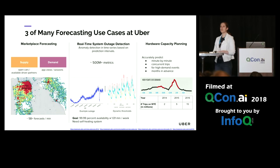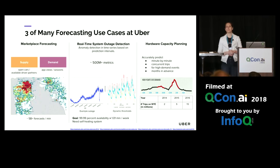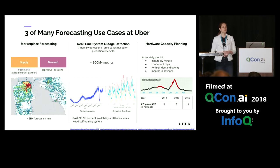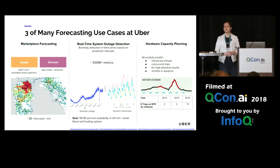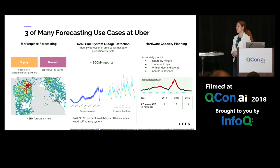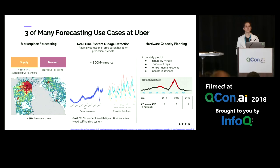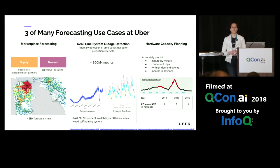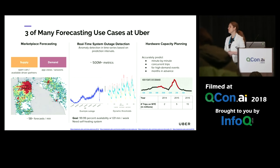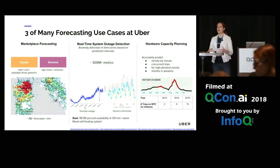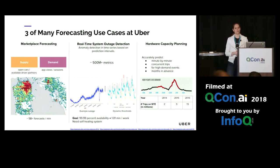Here I'm showing three of the many forecasting use cases that we have. The first one is marketplace forecasting. Here we are predicting both supply and demand, and a couple of other quantities as well, at a very fine granular spatial-temporal fashion.